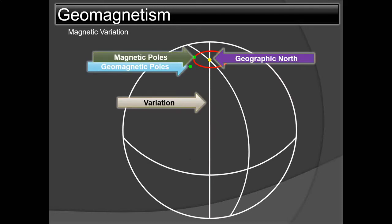The ship's magnetic compass is designed to respond only to the horizontal component of the Earth's field. To prevent the compass card from dipping at latitudes other than zero dip, the compass is designed so that the center of gravity of the card and the magnetic system is well below the point of suspension.